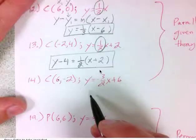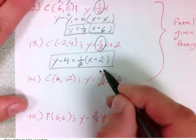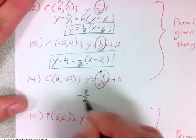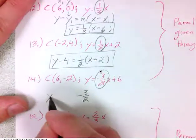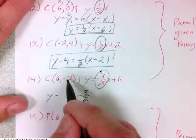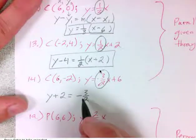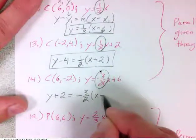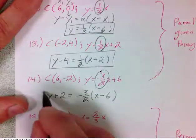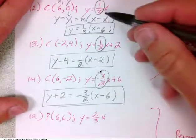For number 14, I want a line parallel to the given line through the point (6, -2). To be parallel, I need to use the slope of negative three-halves. So: y minus negative two equals negative three-halves times x minus six. That gives y plus two equals negative three-halves times the quantity x minus six. There are the three parallel lines for questions 12, 13, and 14.